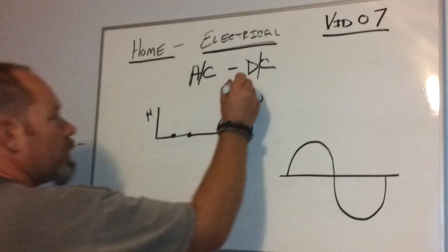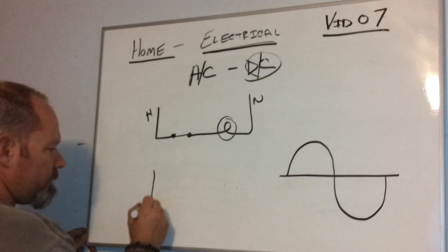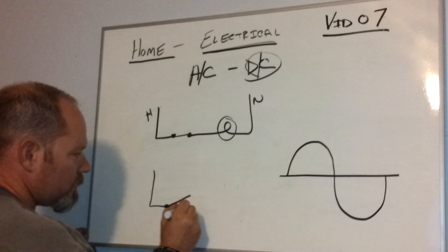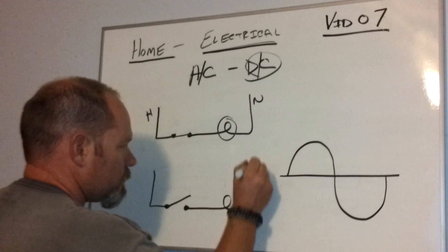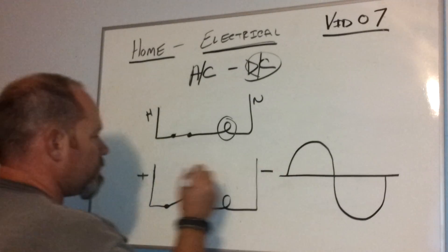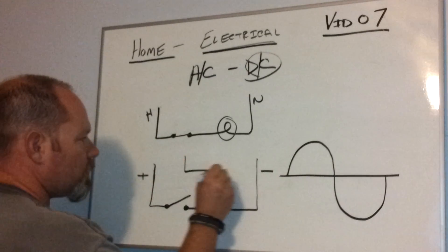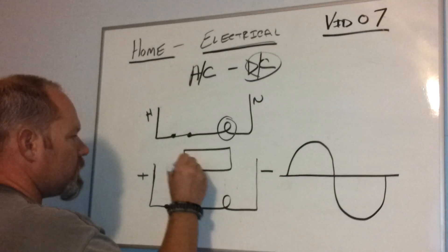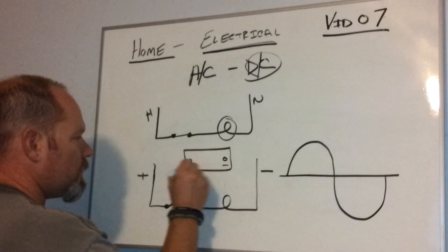Now when you're talking about DC, you can have the same looking circuit, but it's not hot neutral at this point, it's positive and negative. And you need to have a source of power, and that's going to be typically your battery. We're going to draw that in here like so.